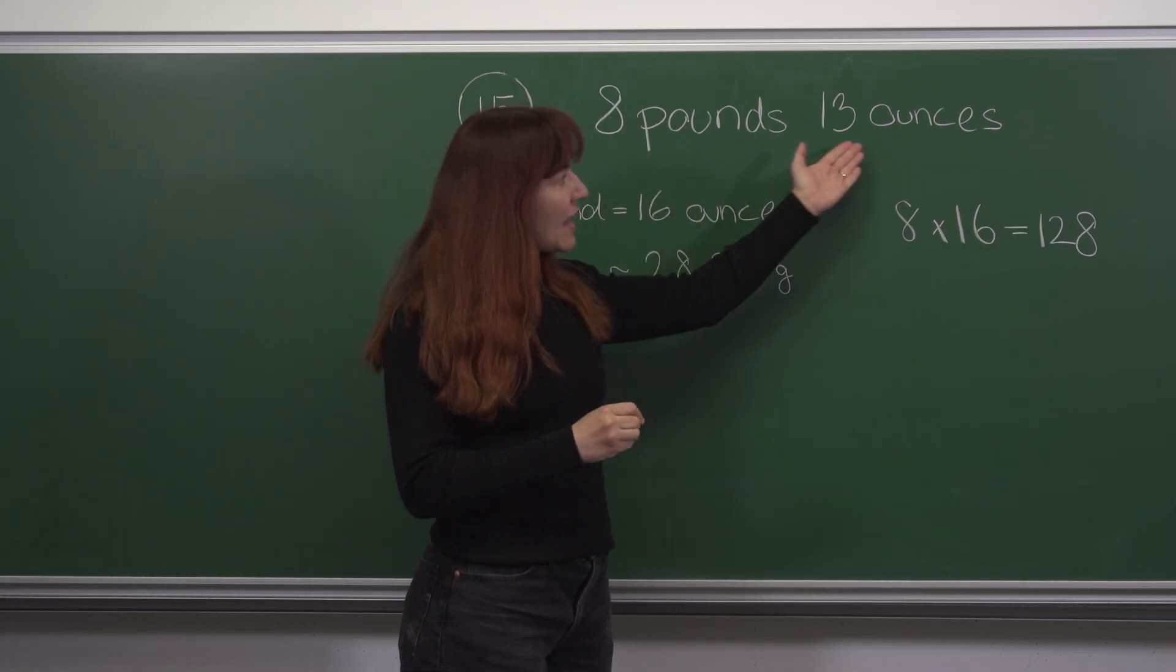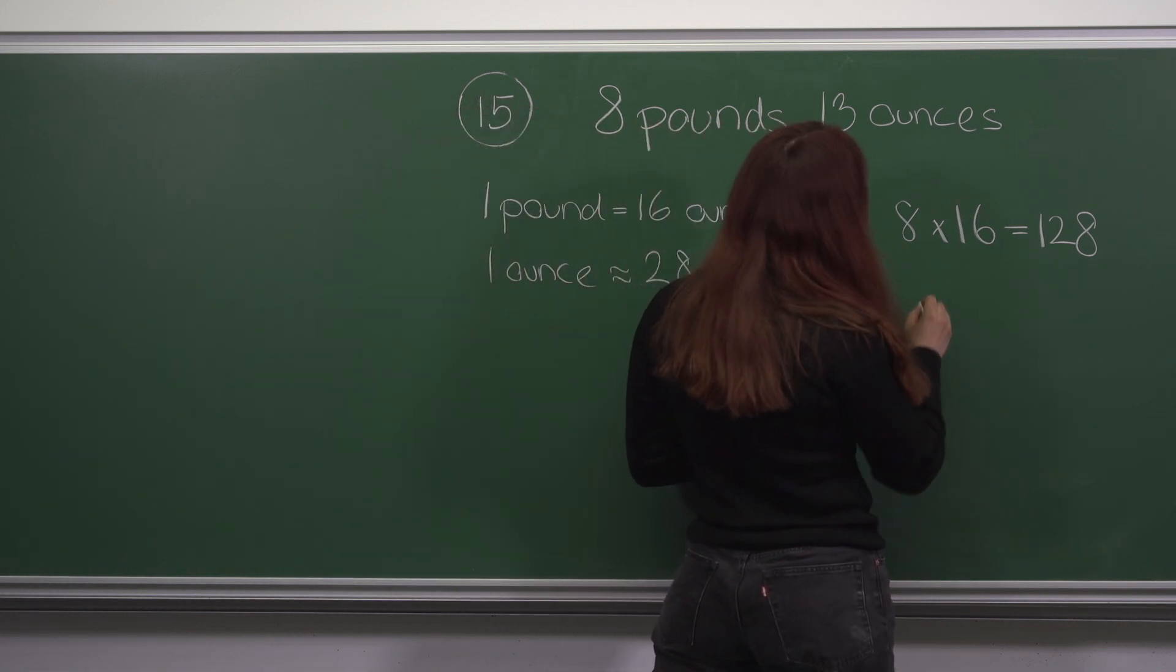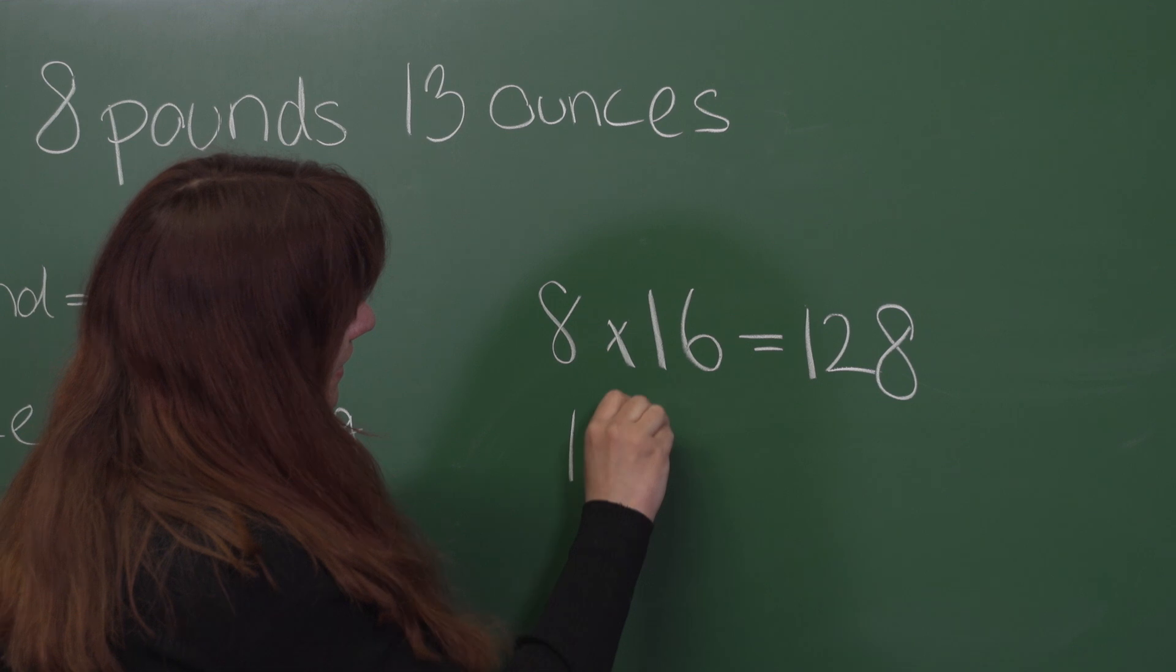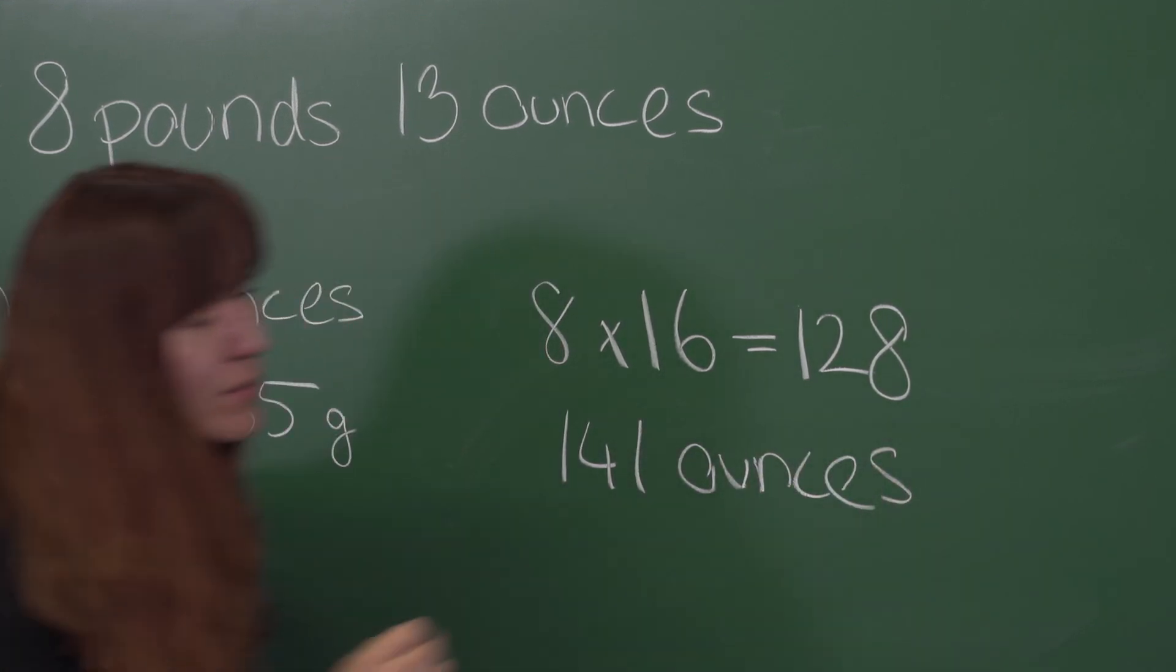The baby is 8 pounds and 13 ounces, so adding 13 to 128, we get 141 ounces as the weight of Jill's baby.